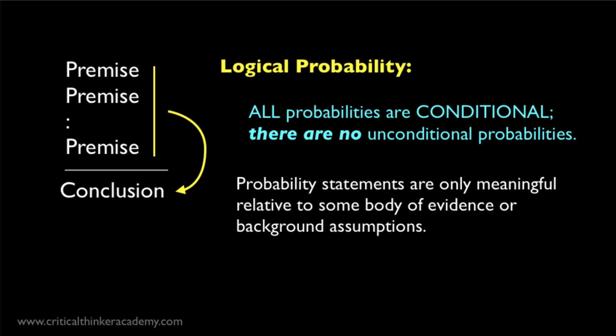One of the interesting features of this approach to probability is that it makes no sense to talk about the probability of the conclusion all by itself. You're always talking about conditional probability, the probability of the conclusion given the premises. Unconditional probability makes no sense. Probability is always relative to some body of evidence or some background assumptions.